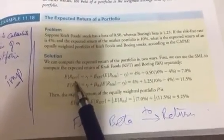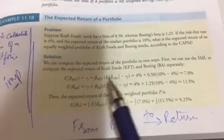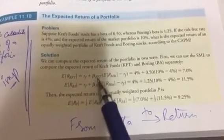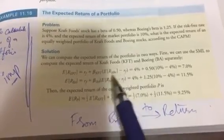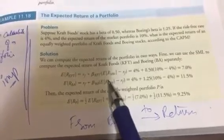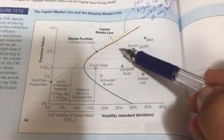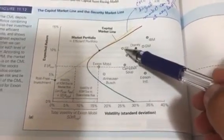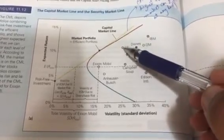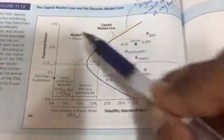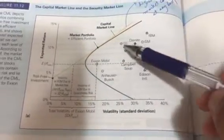I just want to confirm: to calculate the expected return of any stock, if I have the beta I can calculate the expected return. So on this graph, there is no way for GE to get to the market line, because GE will always get a 10.1% return.